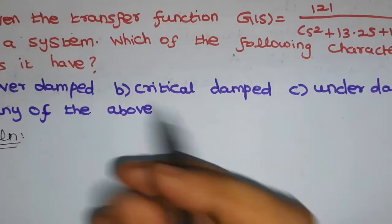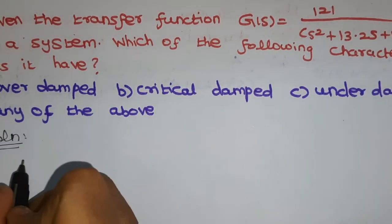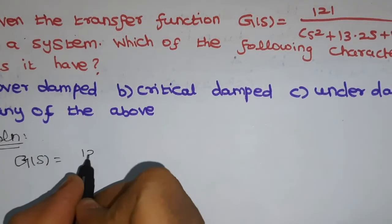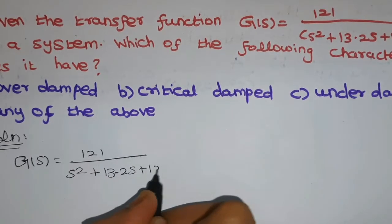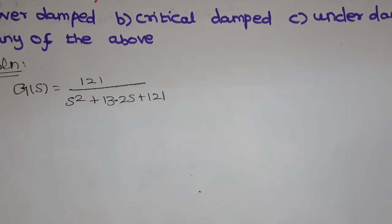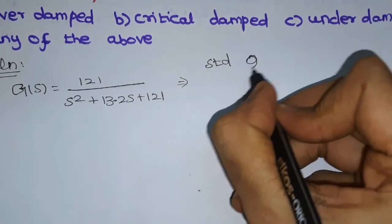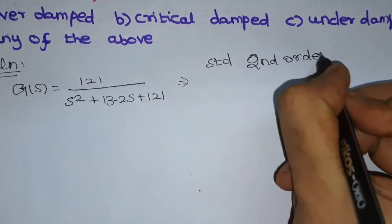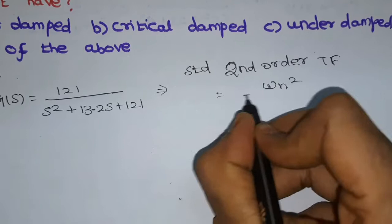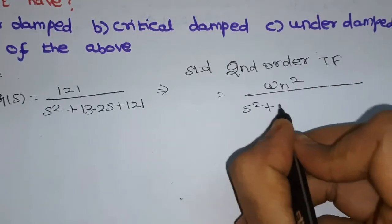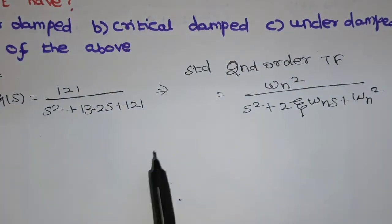Let's see how to solve the problem. The transfer function is given and we have to find out whether it is over-damped, critically damped, or under-damped. By comparing this transfer function to the standard second-order transfer function, the general standard second-order transfer function is omega-n squared divided by s squared plus 2·zeta·omega-n·s plus omega-n squared.